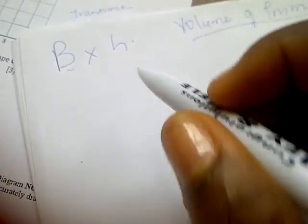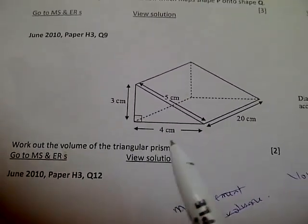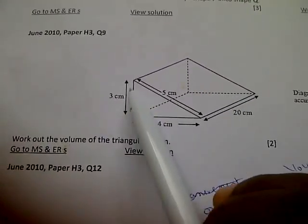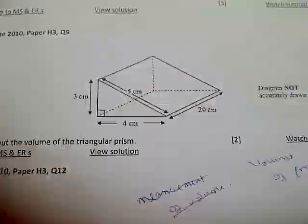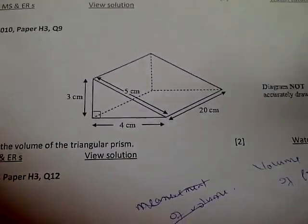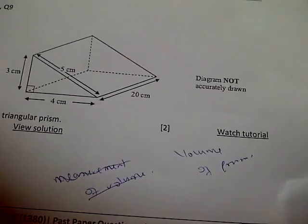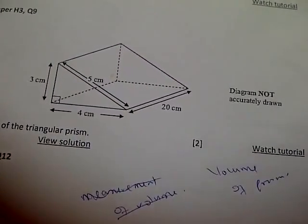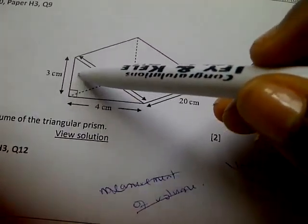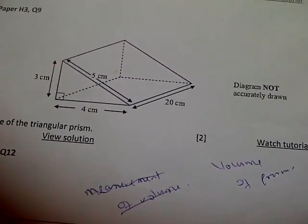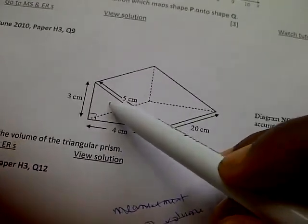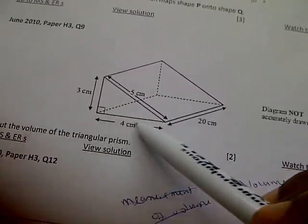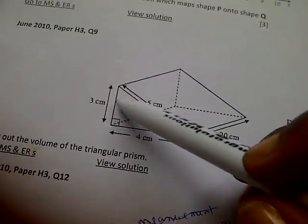To name a prism, for example, if we are told that this is a triangular prism, the triangular side is the base. If we are told it is a rectangular prism, the rectangle part is the base. If we are told it is a square prism, the square part is the base. A square prism is essentially a cube and a rectangular prism is a cuboid.